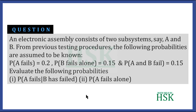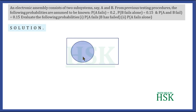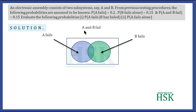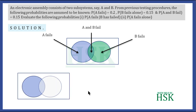Using the Venn diagram: we have two circles. The first circle in light blue represents A failing, and the second represents B failing. Their intersection represents both A and B failing — that is, A intersection B. From the circle representing A failing, we subtract the intersection portion, giving us A failing alone.